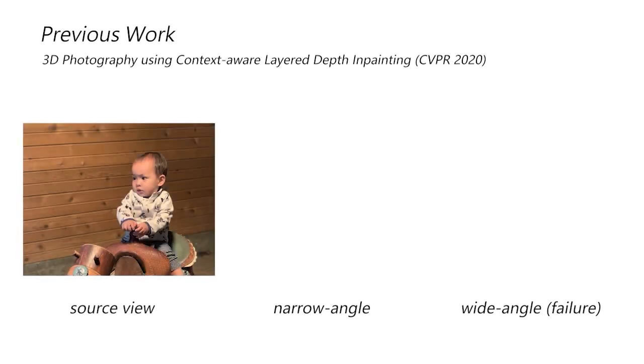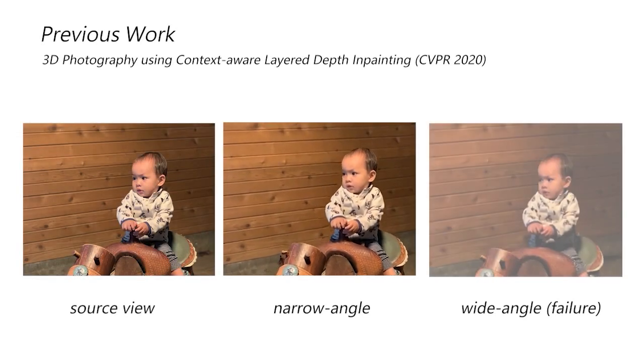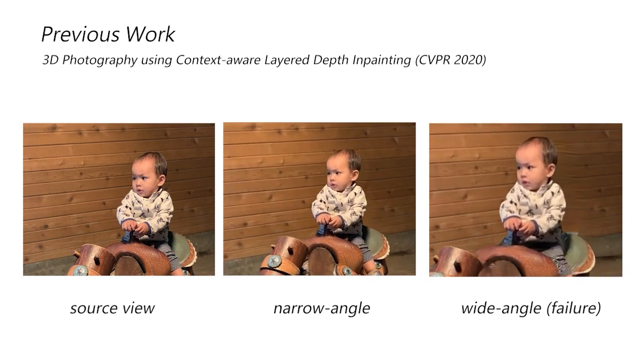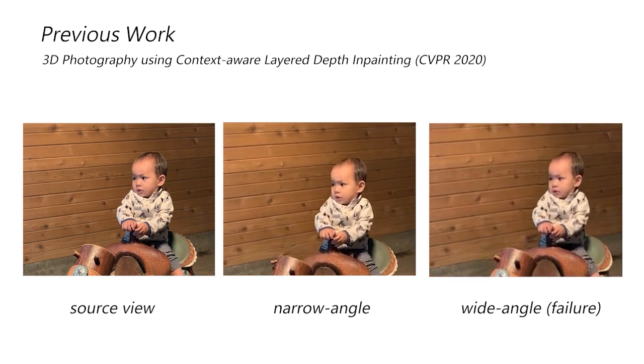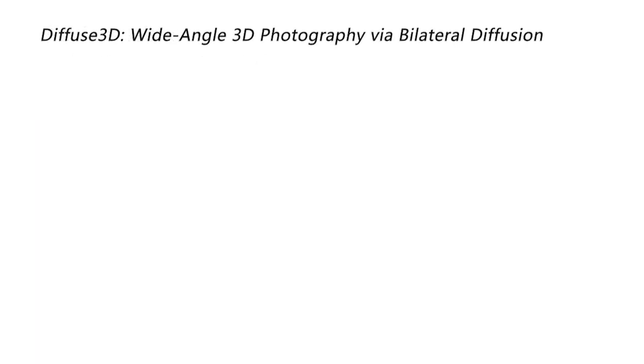Some prior works generate 3D photo from a single image, however they fail to handle wide-angle camera movement. To address this issue, we present Diffuse 3D: Wide-Angle 3D Photography via Bilateral Diffusion.